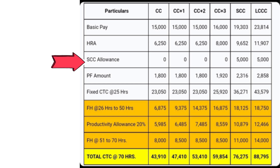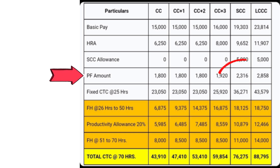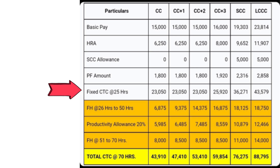Apart from that, there is PF (Provident Fund), which is a standard ₹1,800. I've placed these side by side so it's easier to understand without having to look at multiple salary slips. The PF amount is standard at ₹1,800 and changes a little once you become a Senior Cabin Crew. Whether you're fresh or have two to three years of experience, there is a fixed CTC of 25 hours, so you are assured 25 hours every month and will get a minimum salary of ₹23,050 per month.